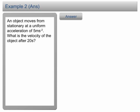The question states that the object moves from stationary, hence the initial velocity u equals 0. Acceleration is 5 meter per second per second, and the time taken is 20 seconds. We need to find the final velocity.